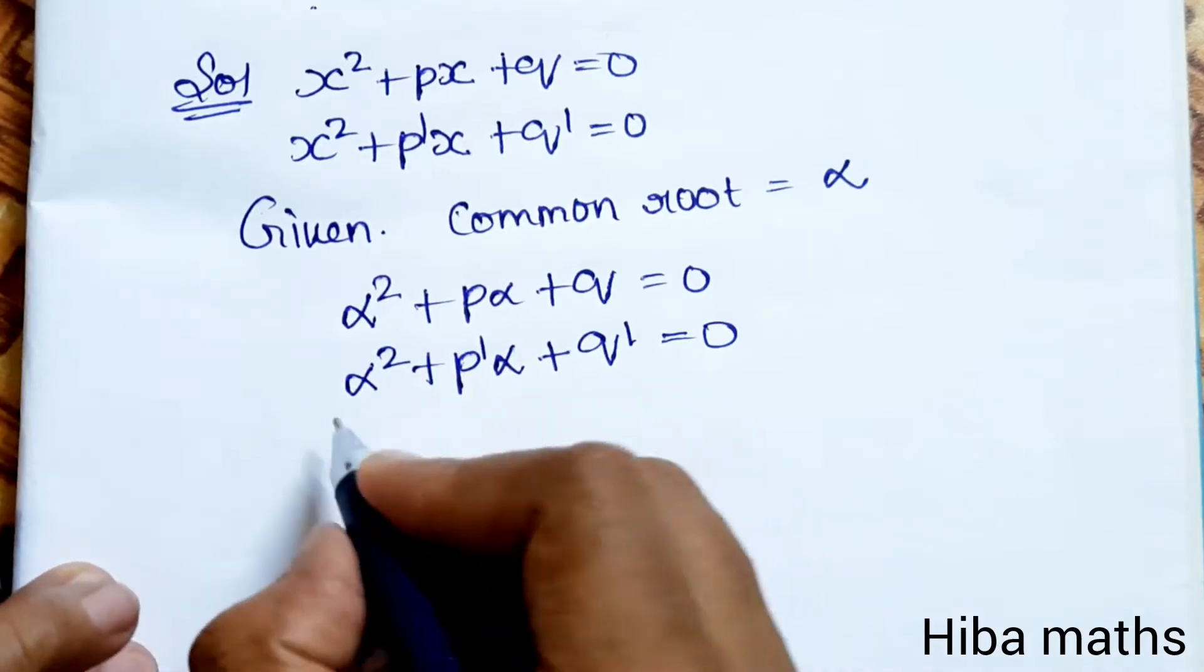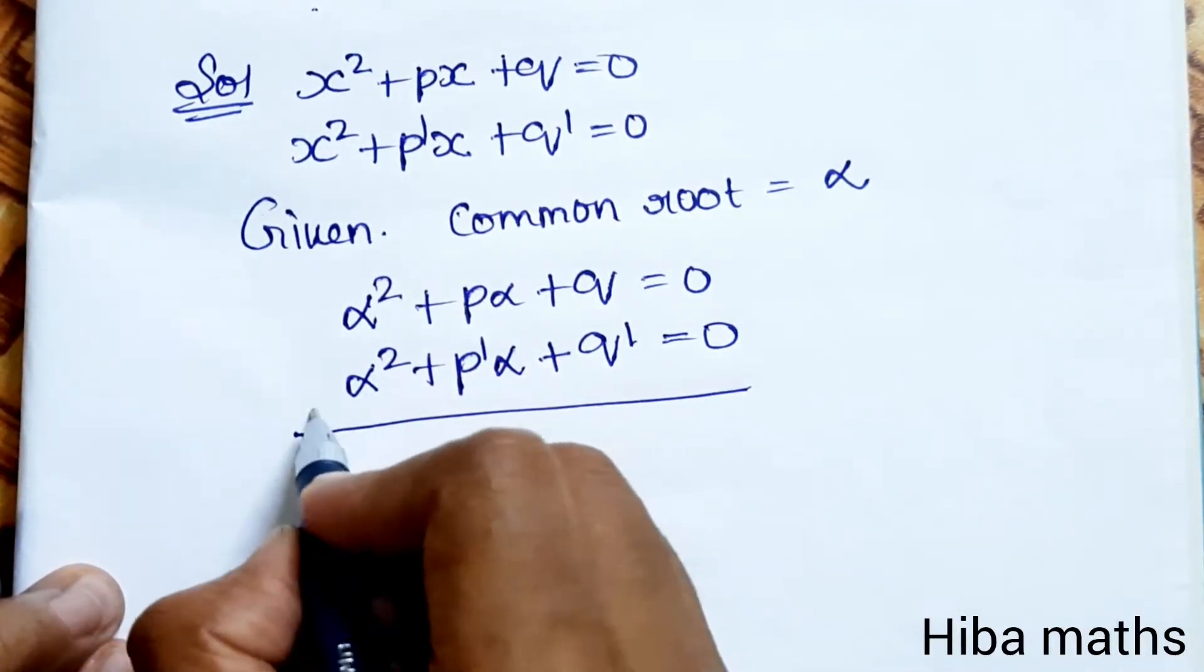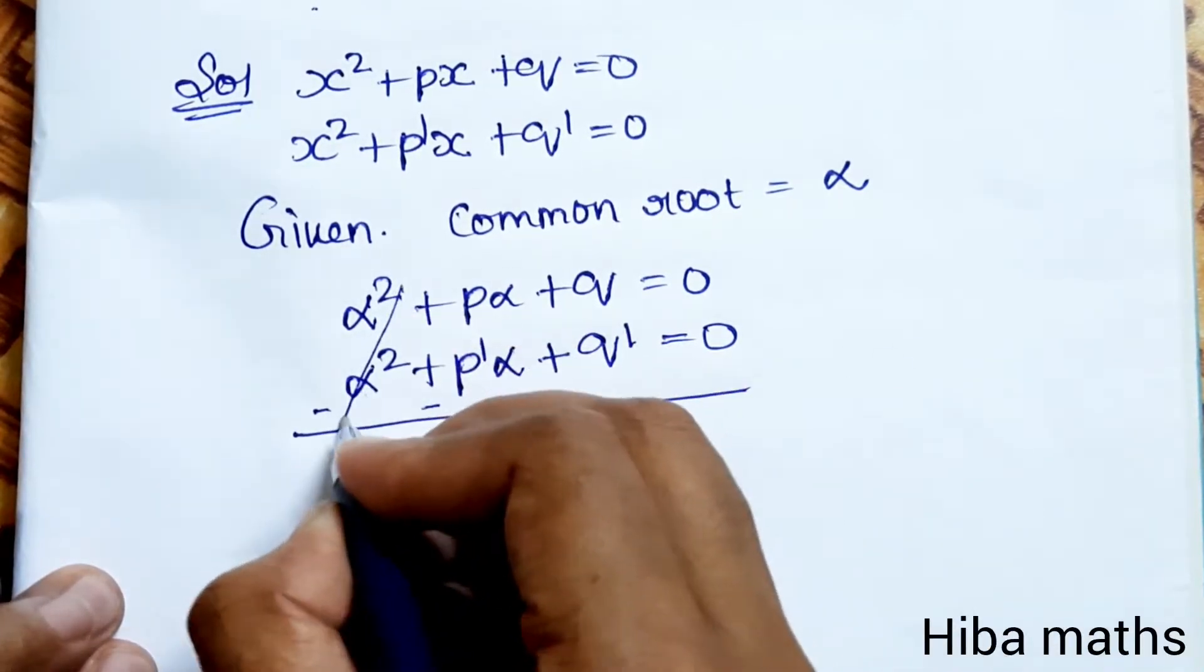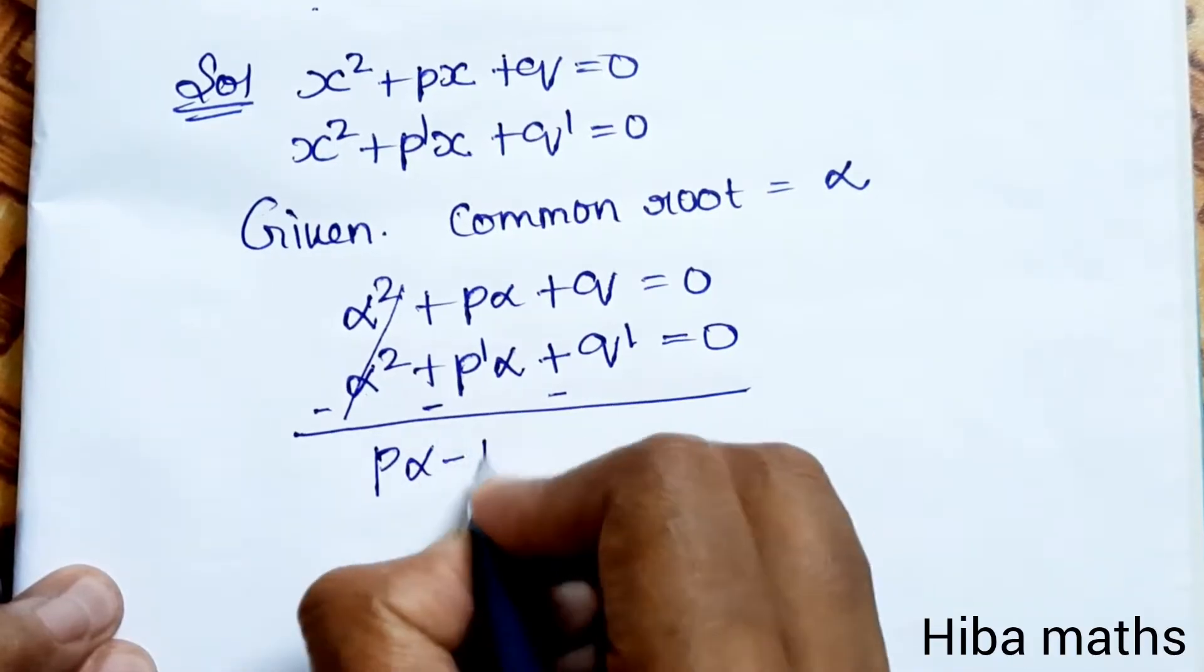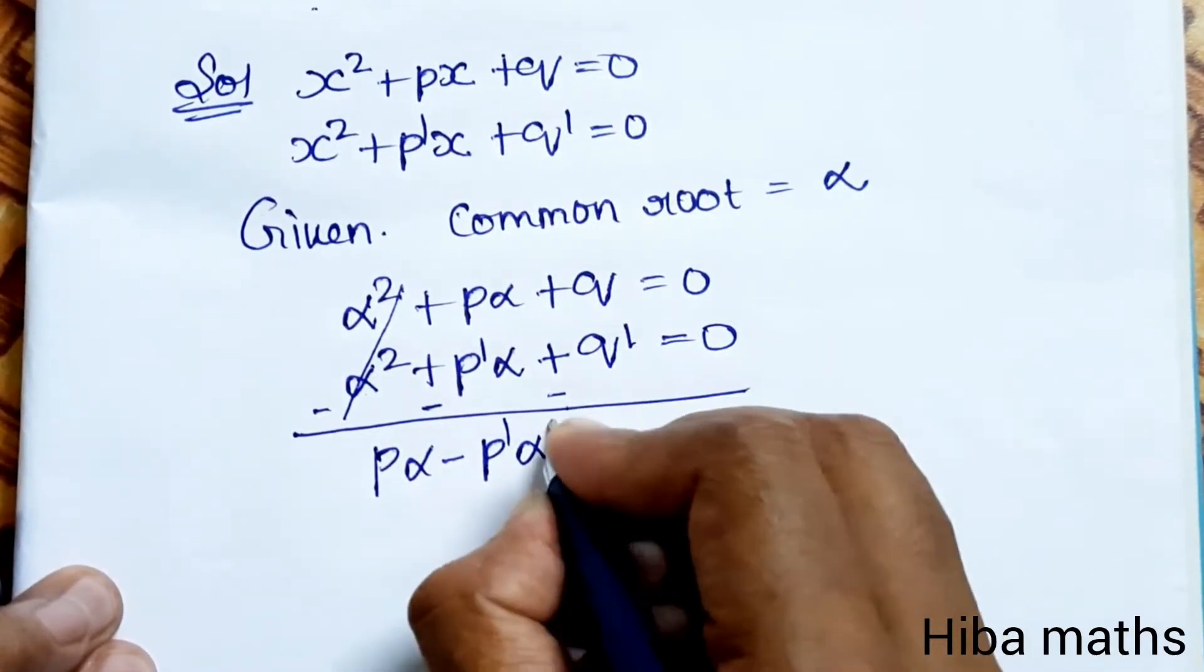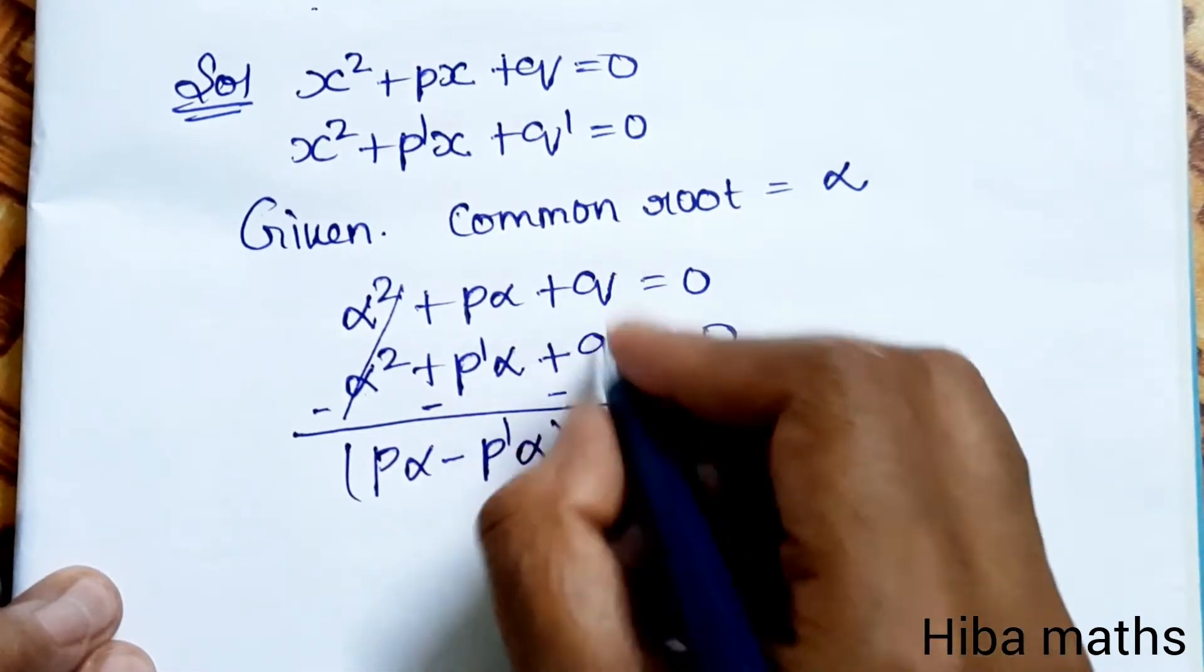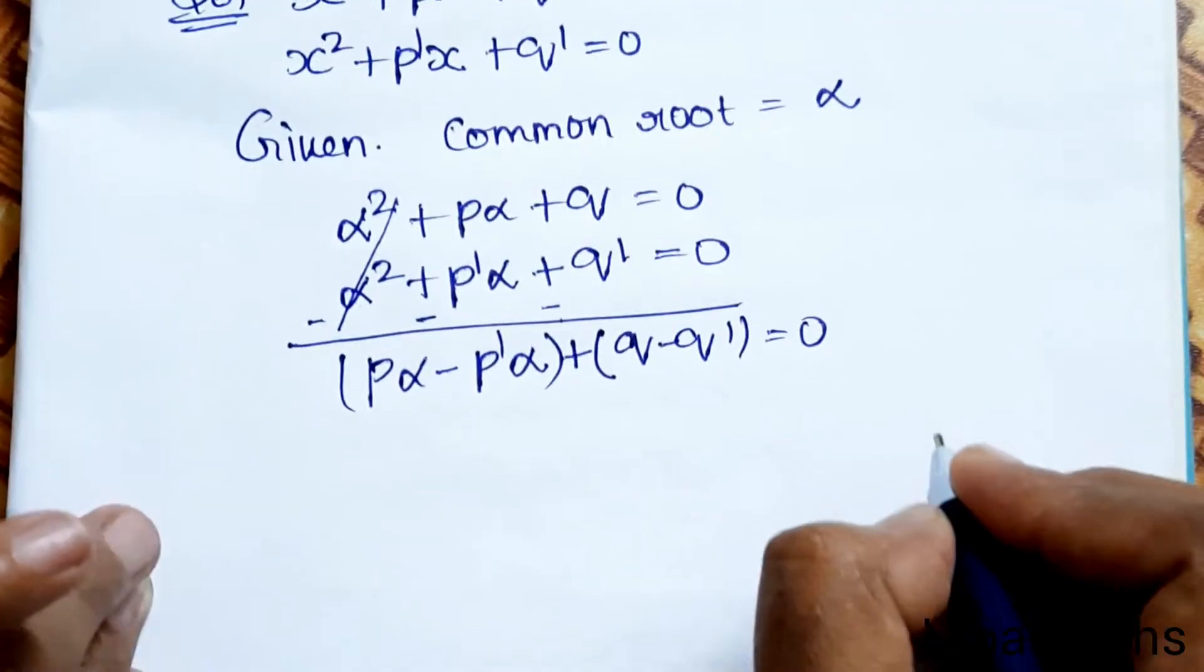I will use elimination method, it is easy. First, eliminate α². Subtracting the equations: minus minus minus, these two cancel. We get pα - p'α + q - q' = 0.